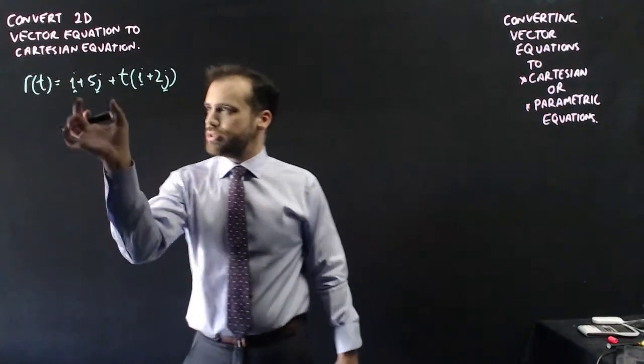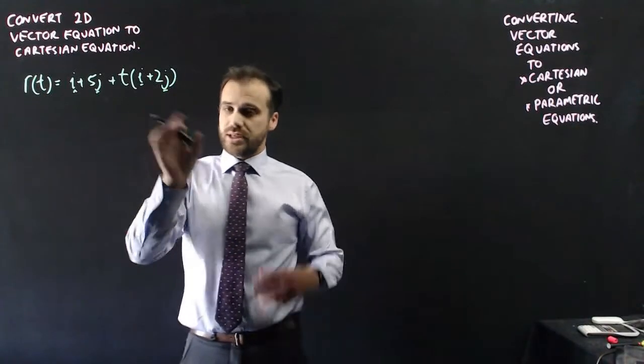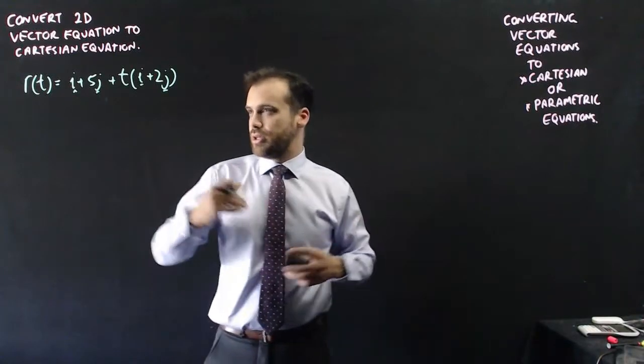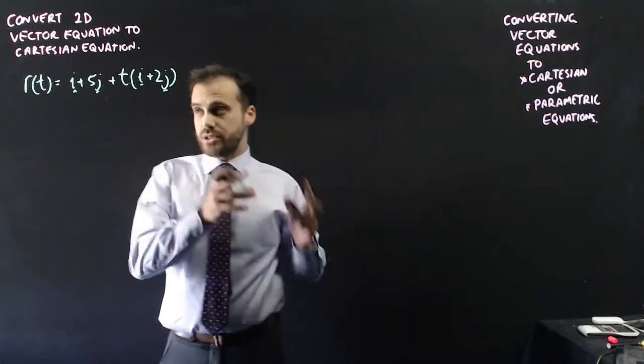So here's my vector equation. This is my starting position, i plus 5j, and this is a vector that is parallel to the line's direction. So if I want to do this, what I need to do is group my i components and my j components.